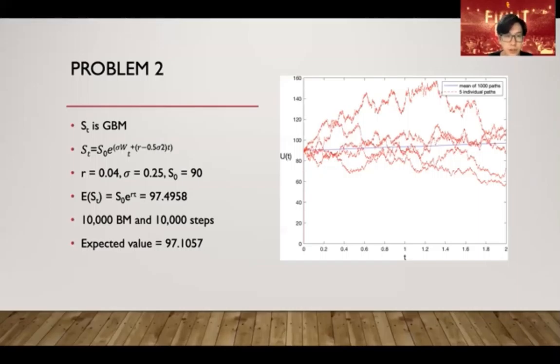Which is pretty close to 97.4958. And as seen before, we plot the first five paths of the 10,000 Brownian motions. We can see these are five possibilities of the stock, the trend of the stock. We can say the mean value of the process is about 97.